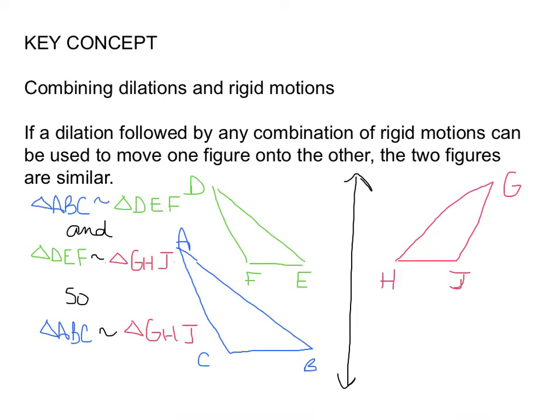Another key concept, combining dilations and rigid motions. If a dilation followed by any combination of rigid motions can be used to move one figure onto another, the two figures are similar. So let's look at this. We see that ABC is similar to DEF. ABC is similar to DEF. And DEF, there's a typo there, is congruent to GHJ. So we have a dilation and then a reflection. So first we dilated and these are similar. Then we reflected and they are congruent. Therefore, we know that ABC is similar to GHJ. Because we dilated here and then reflected. These are similar. These are congruent. So these are similar.